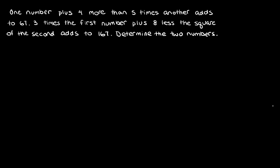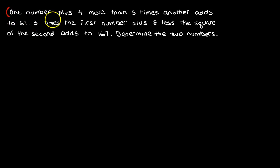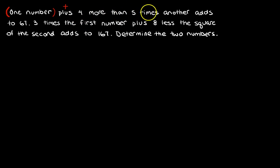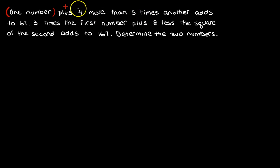That's a bit of a mouthful. What I always think you should do is separate the sentence into the things that you know. I know I'm starting off with one number — I'm going to put a little bracket around that. I'm going to take one number and plus something else, and I know that plus means plus. Four more than five times another: the 'than' means this is all one thing — it's four more than something else. So this whole thing here is one unit; I don't know what it is yet, but it's something.